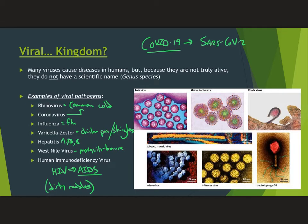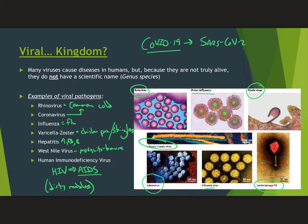A couple other things: rotavirus causes diarrheal disease. Avian influenza or bird flu happened a few years ago — an outbreak in Asian countries. Ebola virus — the big outbreak was in 2014 in Africa; it's a hemorrhagic fever where Ebola virus can cause you to bleed out of your pores and causes death in most cases. Tobacco mosaic virus is studied a lot in research labs but does not infect humans — it infects tobacco plants. Bacteriophages don't infect humans either; they infect bacteria. And adenovirus is a really common respiratory virus that can give people something feeling like a sinus infection, but it's a viral infection.